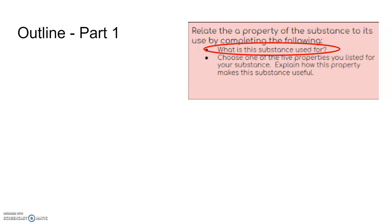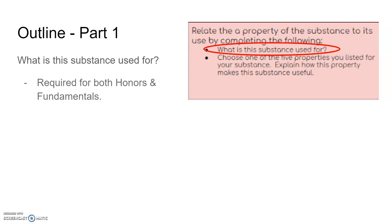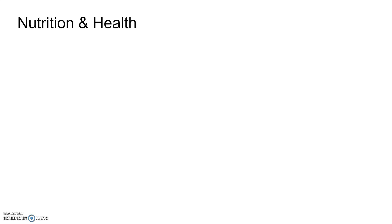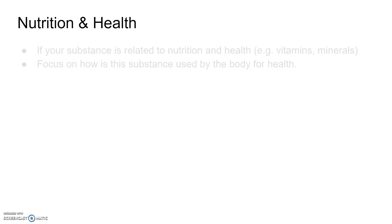The first part of that red section, where you're relating the property of a substance to its use, is answering this question: what is this substance used for? This section is required for both Honors and Fundamentals Chemistry, so everyone should go over this information. When answering this question, you want to discuss the primary use of the substance, and that may depend on the everyday product you find it in. Let's go over some examples based on the types of products that we are discussing. We're going to start with things involving health and nutrition.